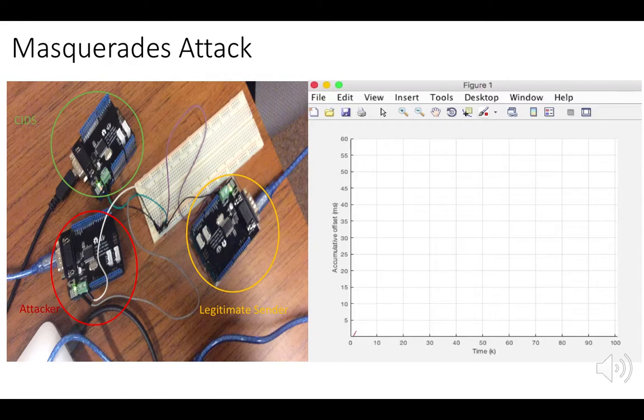For this demonstration, we are using three nodes: one is the Legitimate Sender, one is the Attacker, and one is the CRES.